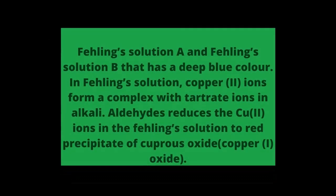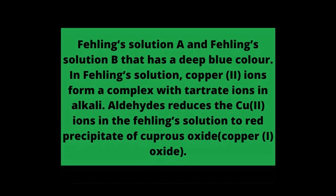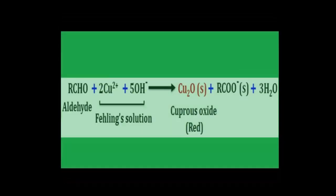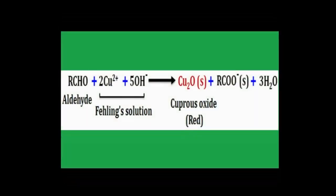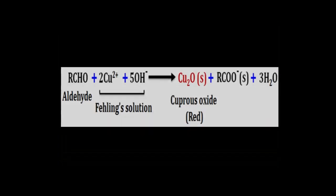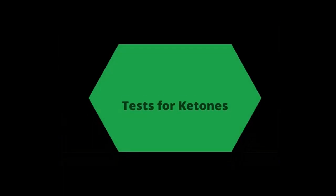Another test for aldehydes is Fehling's solution test. Fehling's solutions A and B are mixed and added to the aldehyde. The cupric ions are reduced to cuprous ions, giving a red color precipitate, which confirms the presence of an aldehyde.